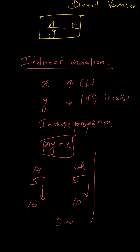For example, consider a tank: if we use one tap the tank fills in 5 hours, and if we use two taps it fills in 2 and a half hours. When we increase the number of taps, the time decreases. So this is an indirect variation. From this we can clearly identify whether a problem is direct or indirect variation.